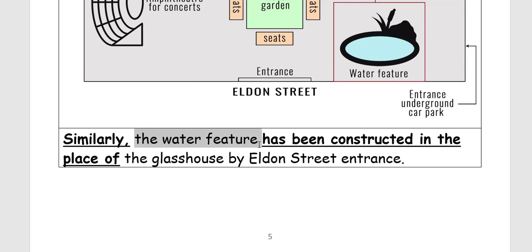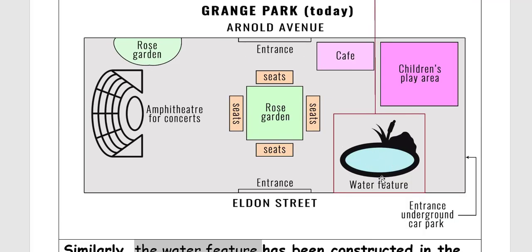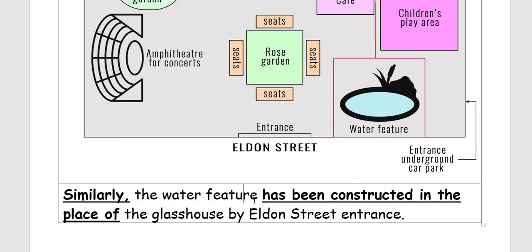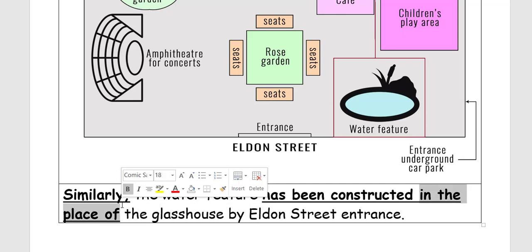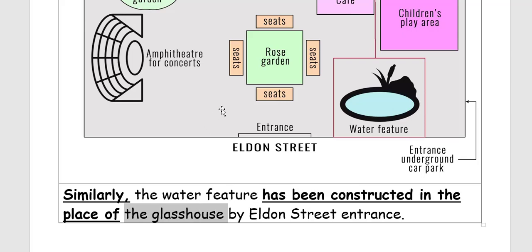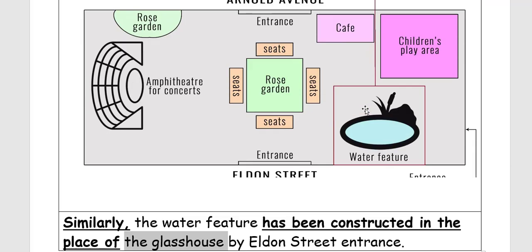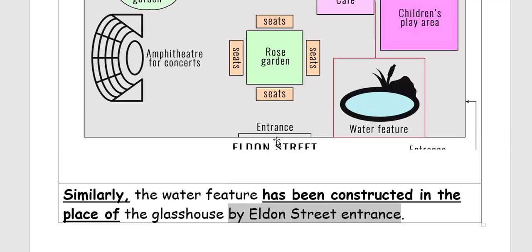Similarly, the water feature has been constructed in the place of the glass house by the Eldon Street entrance. 'Similarly' is used when describing a comparable change. 'Has been constructed' means has been built, and 'in the place of' means instead of. Before there was a glass house; now there is a water feature by Eldon Street entrance.